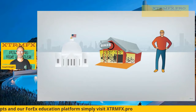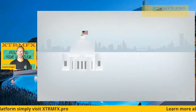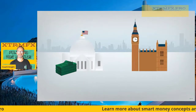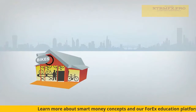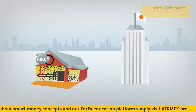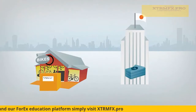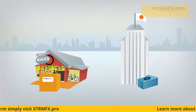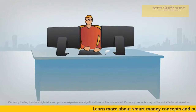Governments use the forex market to implement policies. For example, when conducting business with another country — whether it's borrowing money, lending money, or offering aid — a country needs to convert its currency into a foreign currency. Businesses use the forex market to facilitate international trade, converting payments for goods and services bought overseas or exchanging payments from international customers into their preferred currency. And investors use the forex market to speculate on changes in currency prices.